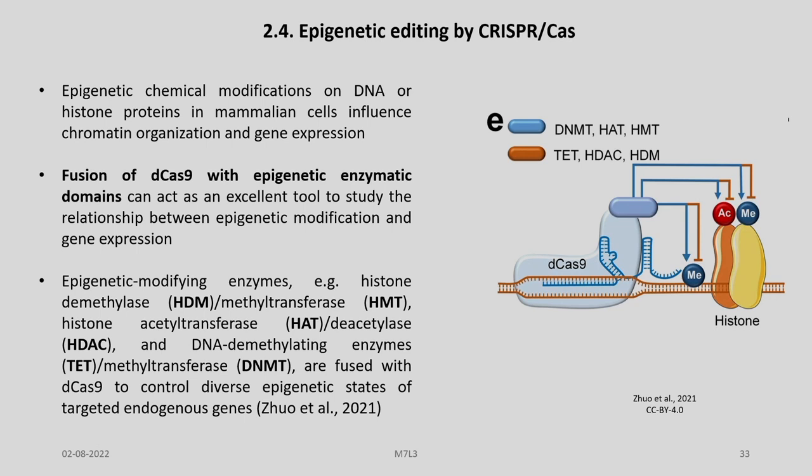We have to be careful here. In general, CRISPR-Cas9 is used for genome editing while the Dead-Cas9 is used for epigenetic editing. Epigenetic chemical modifications on DNA or histone proteins in mammalian cells influence chromatin organization and gene expression. Fusion of D-Cas9 with epigenetic enzymatic domains can act as an excellent tool to study the relationship between epigenetic modifications and gene expression.